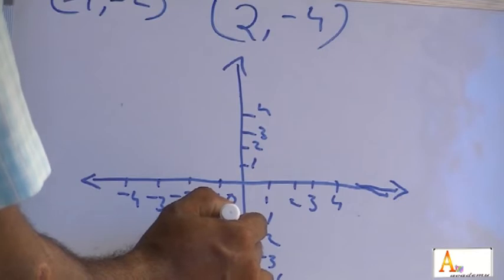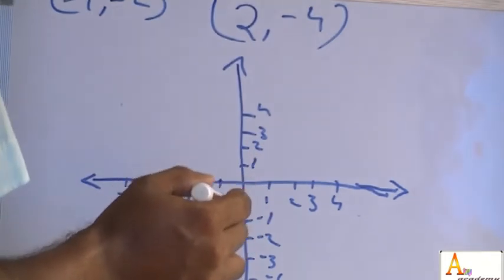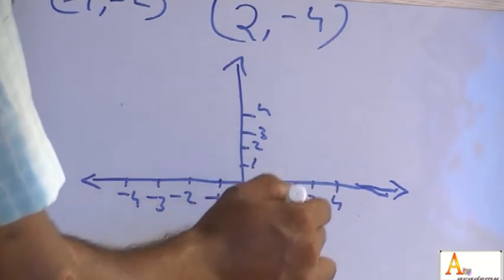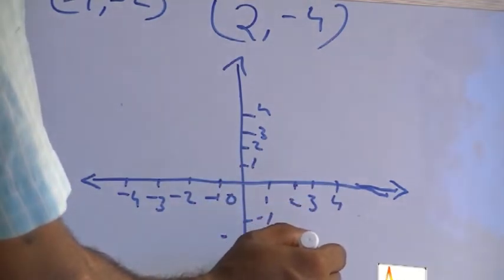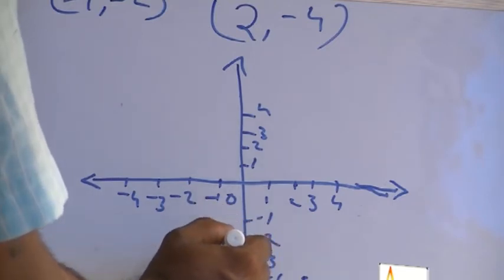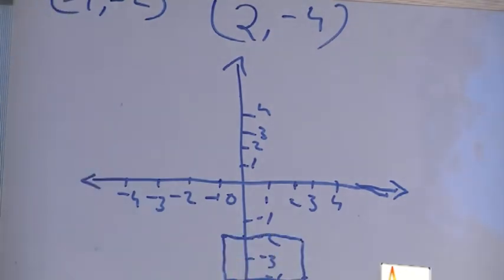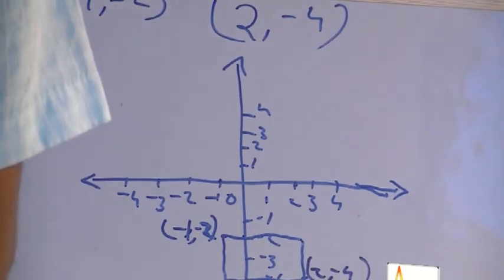16 plus two. x is 2, y is 2 minus 4, so we can add to the point — this will be the same. We can do, we can add the point.